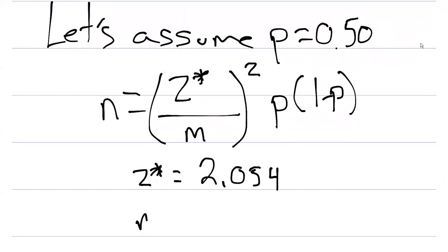Our margin of error then is 0.03 because we want to be within plus or minus three percentage points in our response.